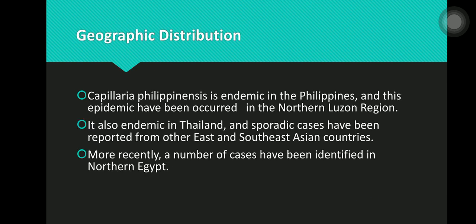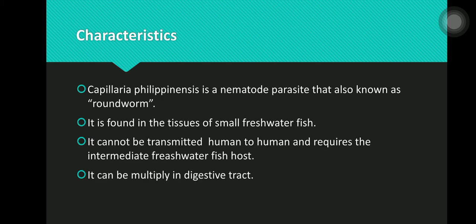Regarding geographic distribution, Capillaria philippinensis is endemic in the Philippines, and this epidemic has occurred in the northern region. It is also endemic in Thailand, and sporadic cases have been reported from other East and Southeast Asian countries. More recently, a number of cases have been identified in northern Egypt.